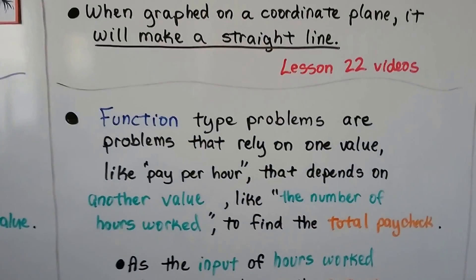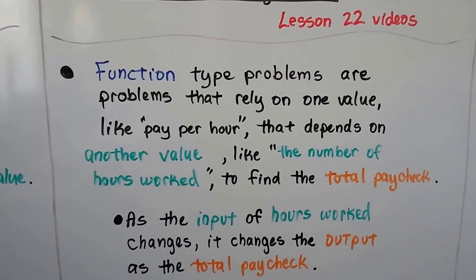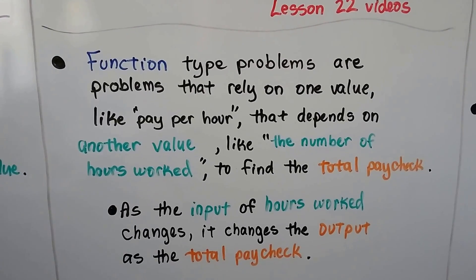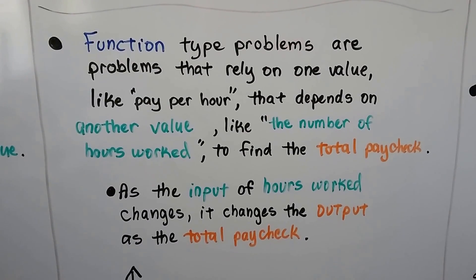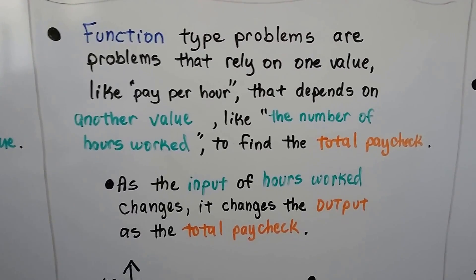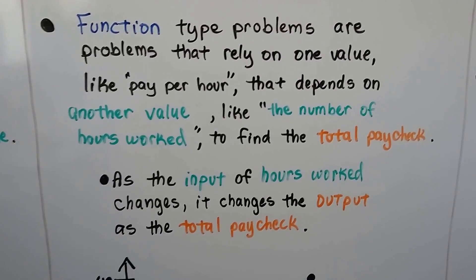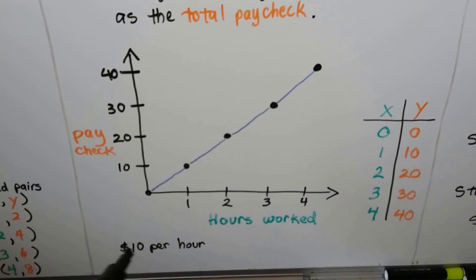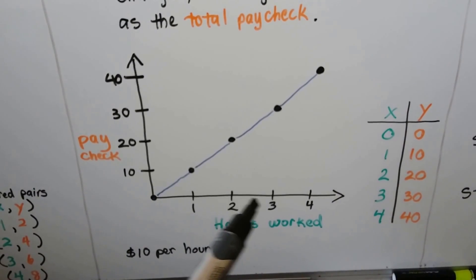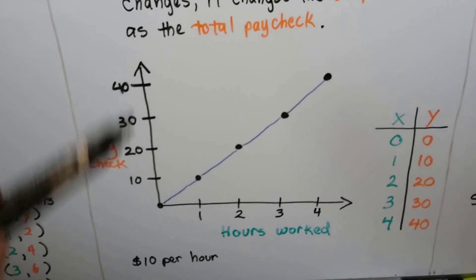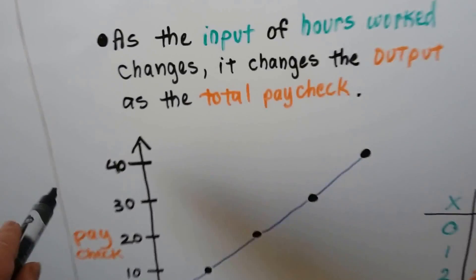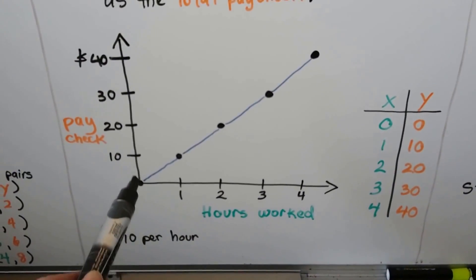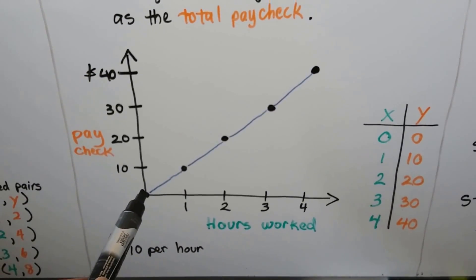Function type problems are problems that rely on one value, like pay per hour, that depends on another value, like the number of hours worked, to find the total paycheck. As the input of hours worked changes, it changes the output as the total paycheck. This person makes $10 per hour. Here's the number of hours worked, and here's the paycheck in dollars.